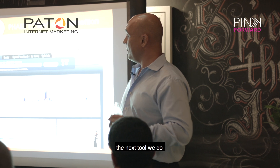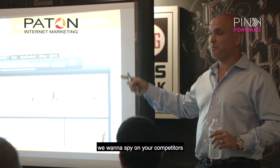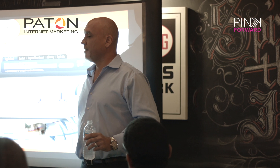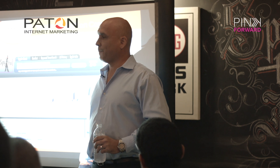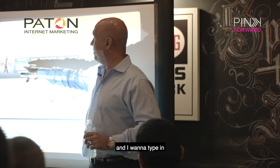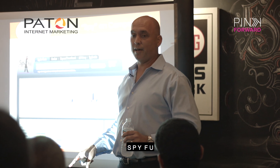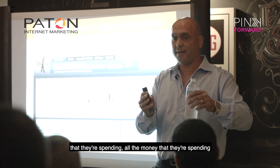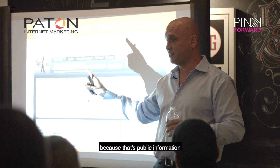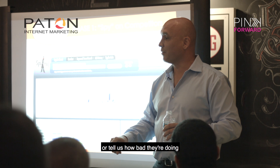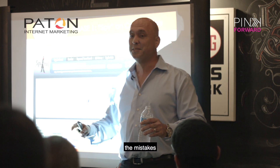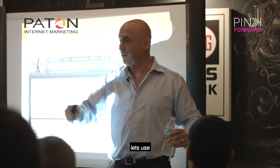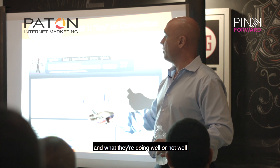The next tool we use is to spy on your competitors. So instead of asking the client what their keywords are, I want to ask who their competitors are. I want to go to SpyFu — S-P-Y-F-U. Here's what SpyFu does: it takes all the data and money they're spending on pay-per-click, because that's public information, and it tells us how well or how poorly they're doing. So let's use their mistakes and use their money to build our campaign — using the money of their competitors and what they're doing well or not well.